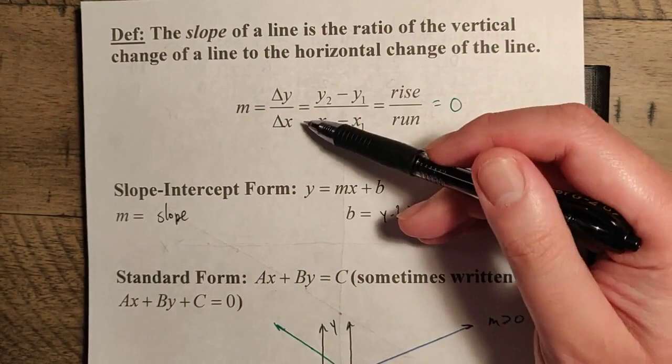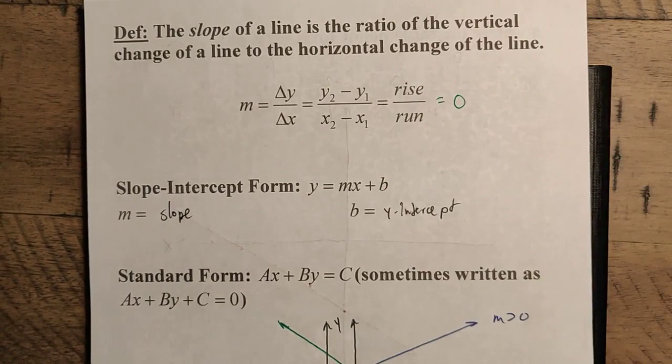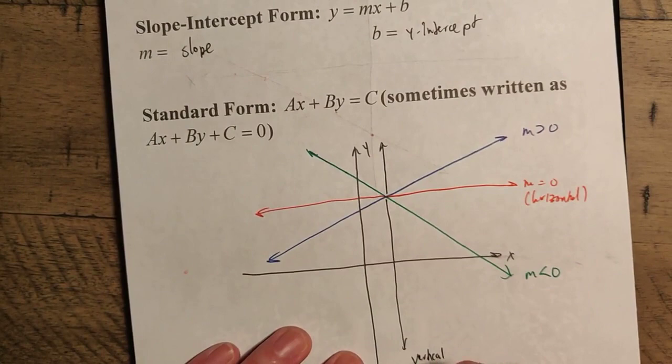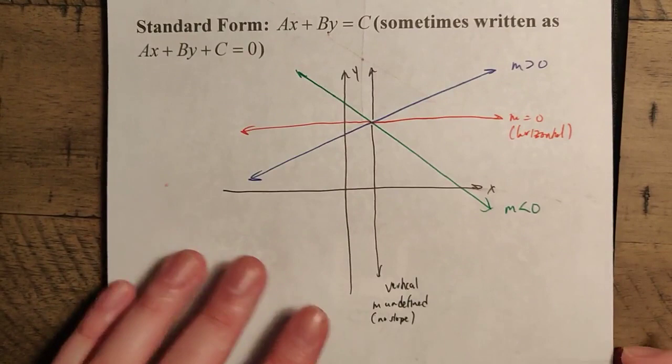So that means in this situation, essentially what we have here, if we look at our thing again, delta y over delta x, delta x is zero. So that means it's not changing, which means that we're going to have a zero denominator. Uh-oh. We have a fraction with a zero denominator, so the fraction is undefined. So here, M is undefined. So we say that it has no slope.